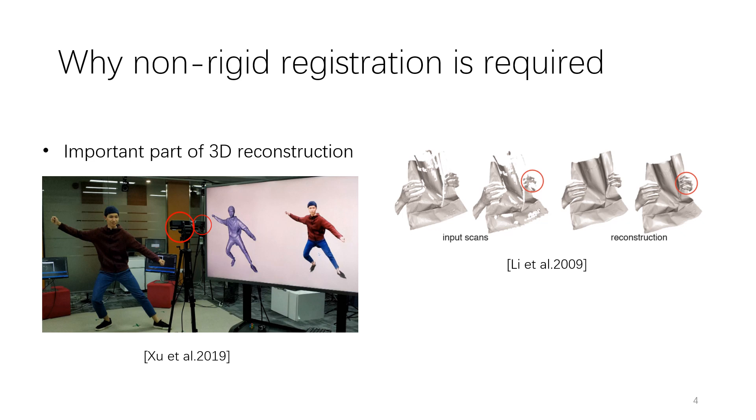Non-rigid registration is a fundamental problem for 3D object tracking and reconstruction from point clouds or meshes, especially for dynamic objects.